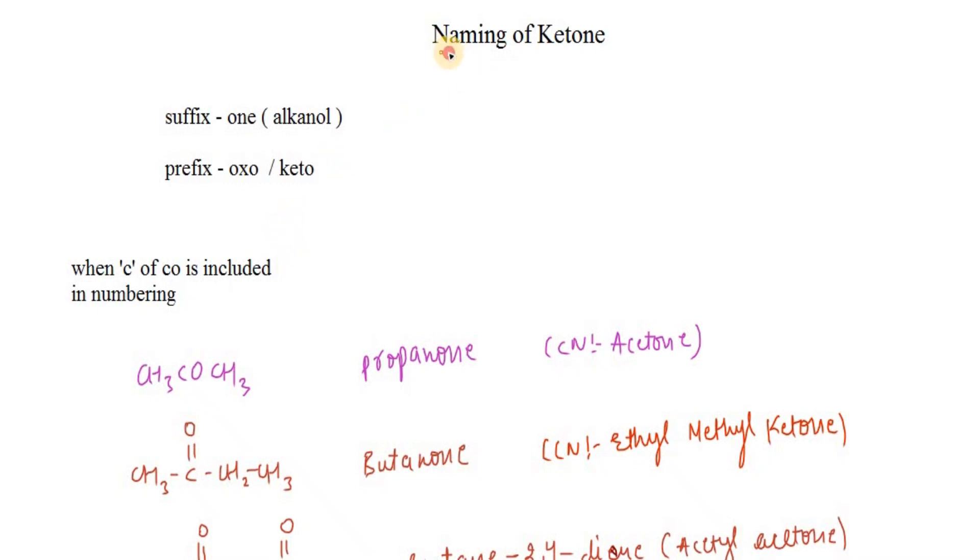In this video we're going to learn how to name ketones. Ketones have a carbon double bond with oxygen, and both sides are occupied by alkyl groups.